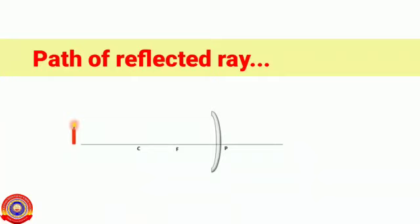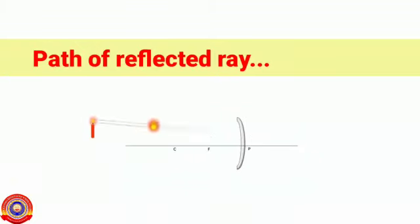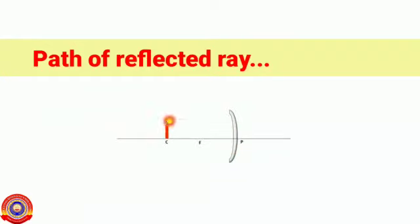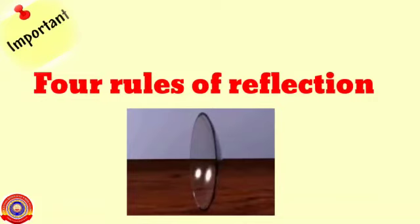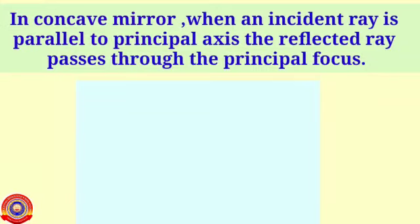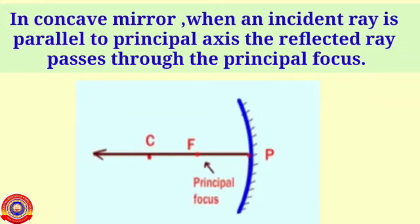How do we draw the path of the reflected ray of light that is incident on a spherical mirror? We can draw the path of the reflected ray of light in accordance with the law of reflection. There are four rules of reflection by a spherical mirror. Rule number one: in the case of a concave mirror, when an incident ray is parallel to the principal axis, the reflected ray passes through the principal focus.